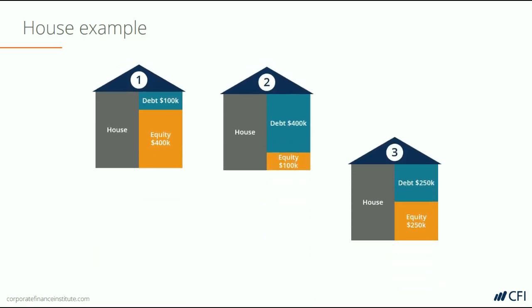Let's take another look at a house example. Imagine three different houses, each financed in its own way. The first house is financed with a $100,000 mortgage and $400,000 equity. The second house is financed with a $400,000 mortgage and $100,000 equity. And the third is financed with a $250,000 mortgage and $250,000 equity.